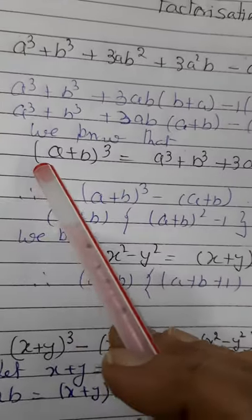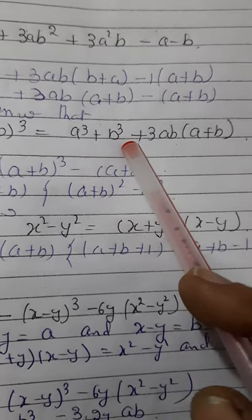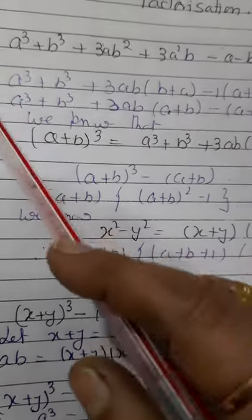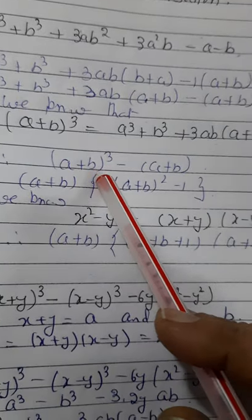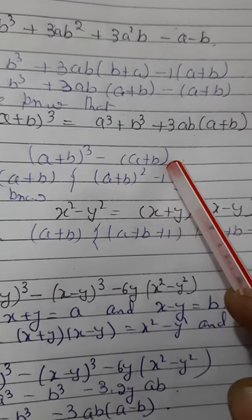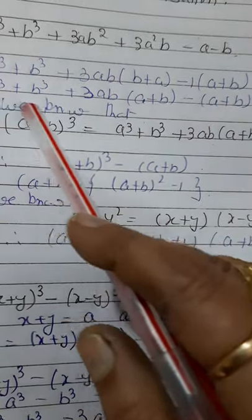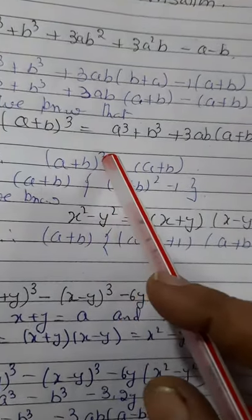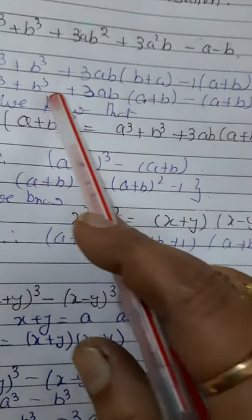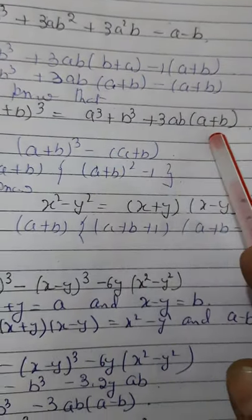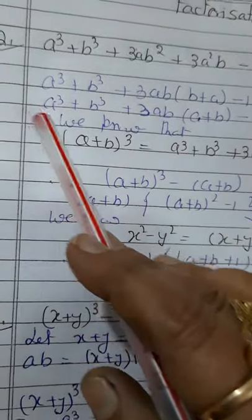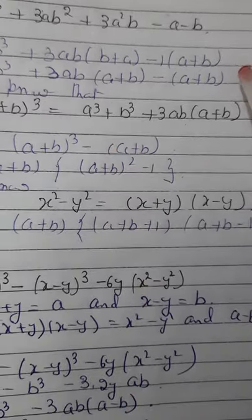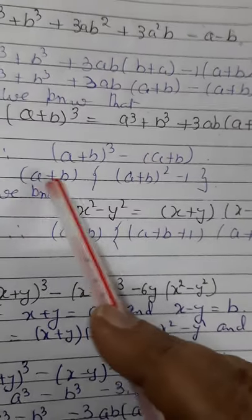Now we know that (a + b)³ = a³ + b³ + 3ab(a + b). So in place of these three terms — a³ + b³ + 3ab(a + b) — we can write (a + b)³. So we have (a + b)³ minus (a + b). Now we can take a + b common, giving us a + b times [(a + b)² - 1].